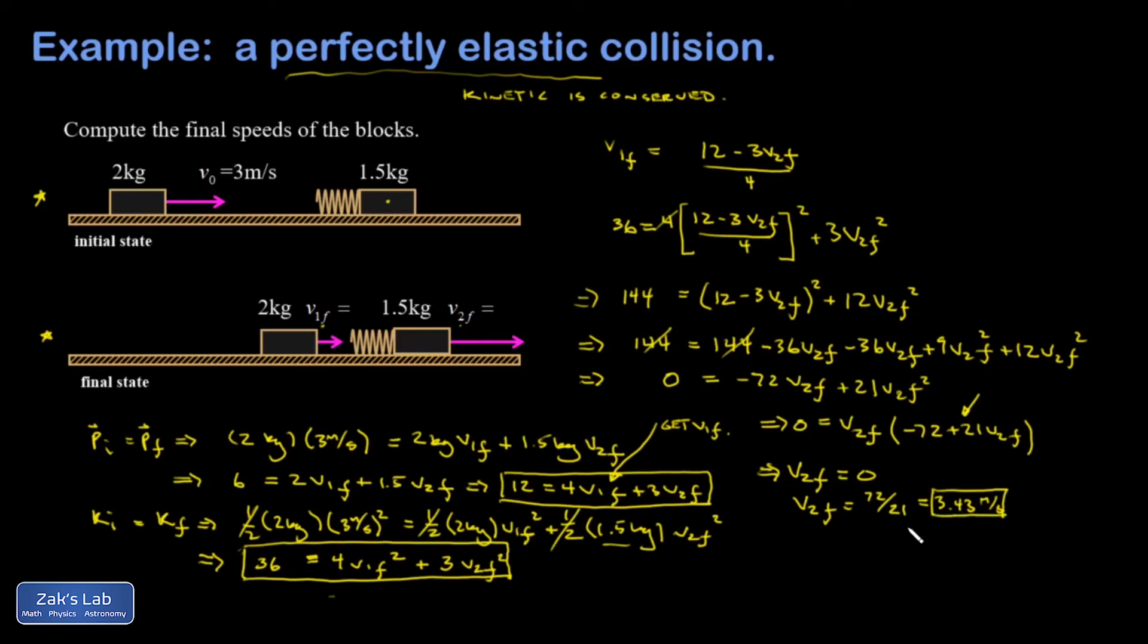Now I know for physical reasons that's got to be the answer we're looking for, because this block got hit from the left, of course it's going to be moving to the right at the end of the process. But why did the mathematics return to us this extraneous solution of zero? It's because all the mathematics knows is that we want momentum to be conserved and we want kinetic energy to be conserved, and one way to do that is for the collision to never occur in the first place.